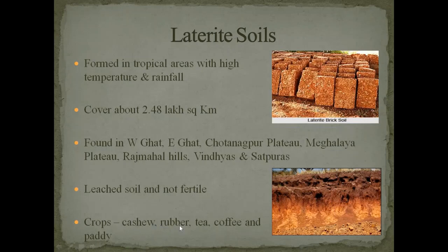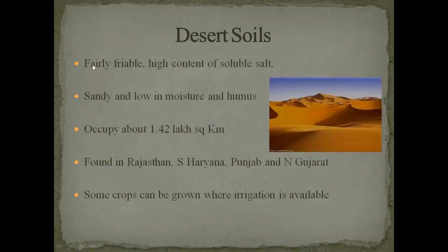Cashew can be grown in the hilly regions of South Kerala. Rubber, tea, coffee and rarely paddy are the main crops grown in laterite soil. This is about laterite soil.